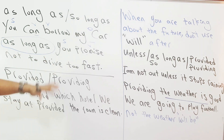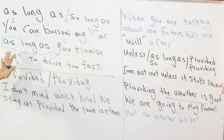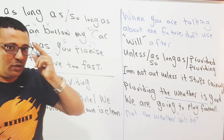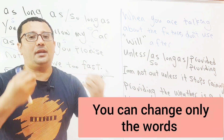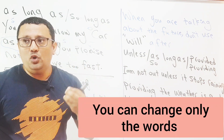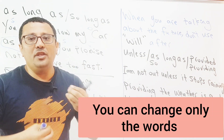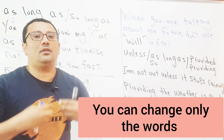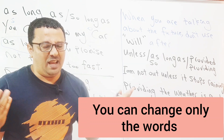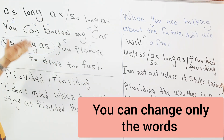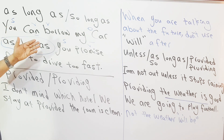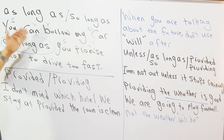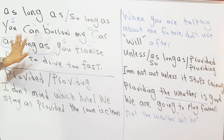بعد كذا: 'not to drive too fast' - نفس الطريقة. عندما أنت تريد أن تكون جملة نفس الموضوع، اعمل نفس طريقتي. You can change only the words - تستطيع أن تغير فقط the vocabulary - المفردات. فتستطيع مثلا أن تقول: 'she can', 'she will', 'she could' - غير كما تريد.